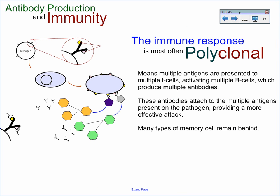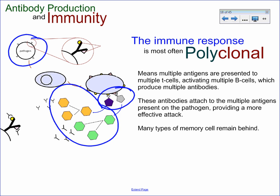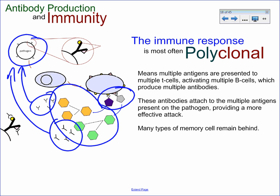Usually in your body there's more than one antigen on a pathogen, which means there's going to be more than one type of T cell and more than one type of B cell being activated, so that you get more than one antibody affecting the pathogen. This is called polyclonal selection, and it's a more accurate model of how these things happen.